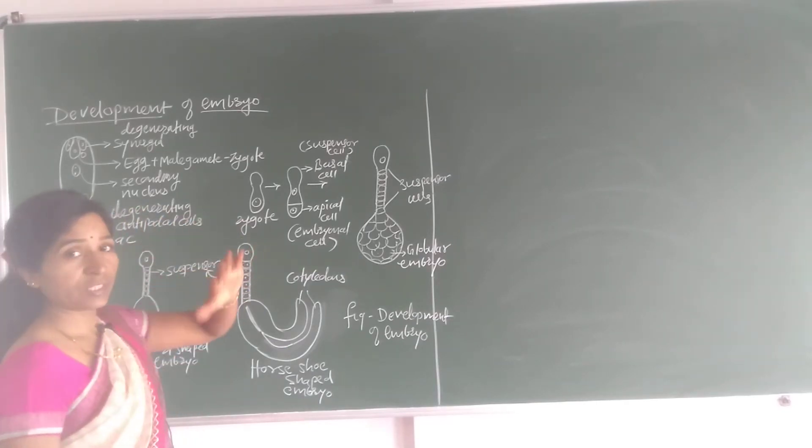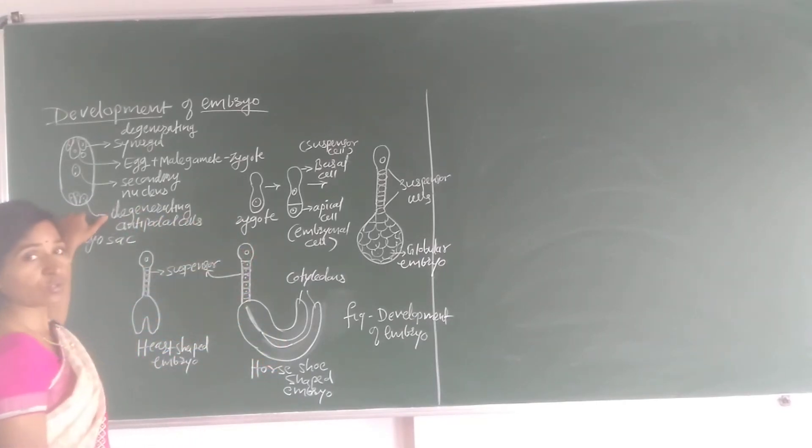First we will see here in the embryo sac. This is embryo sac. This consists of an egg apparatus. At the centre an egg and synergid cells these are called synergids.